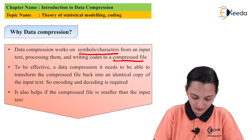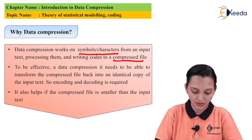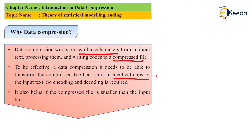To be effective, a data compression method needs to be able to transform a compressed file back into an identical copy of the input text. That means no loss — an exact replica of the input is required at the receiver side also.